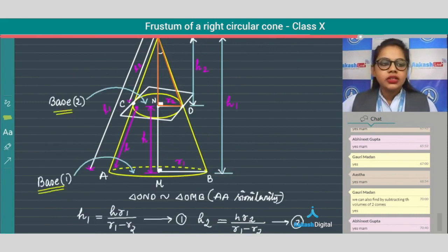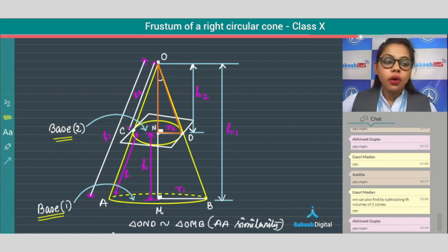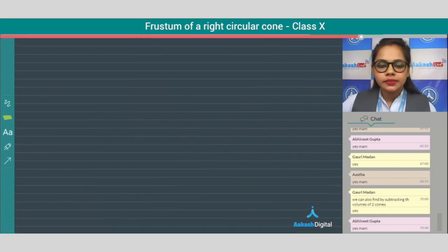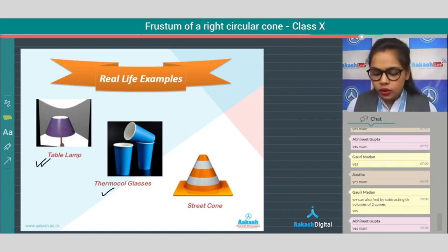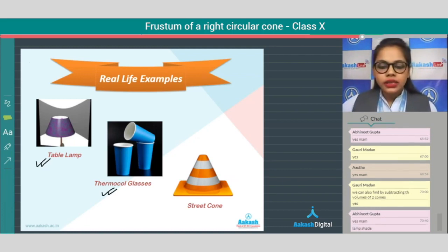Now we'll see some real life examples of frustum which we use in daily life. So let's move forward to this slide. Do we use table lamp in our daily life? Yes. Thermocore glasses are also one great example of frustum, right? And this street cone, it is also a very good example of frustum. I hope this topic is very clear to everyone.